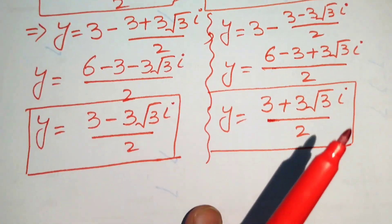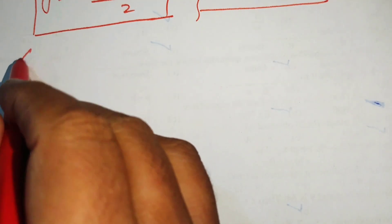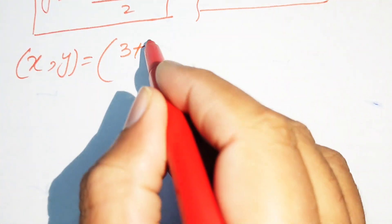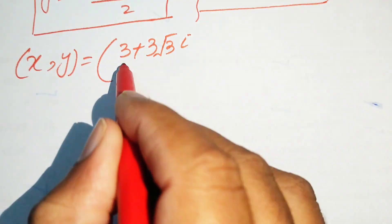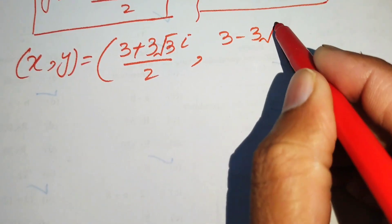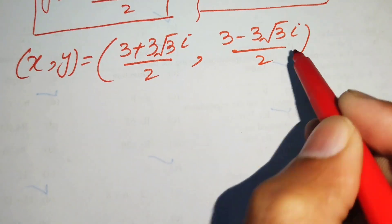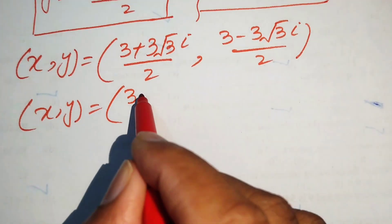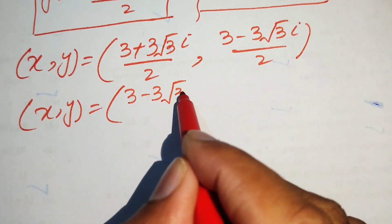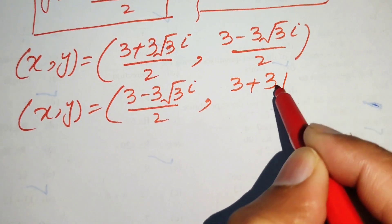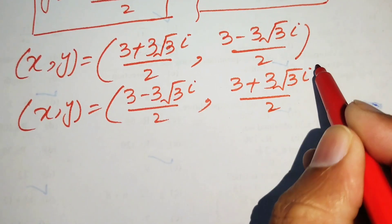The two solutions of the given equation are: first solution: x equals (3 plus 3 root 3 iota) divided by 2 and y equals (3 minus 3 root 3 iota) divided by 2; second solution: x equals (3 minus 3 root 3 iota) divided by 2 and y equals (3 plus 3 root 3 iota) divided by 2.